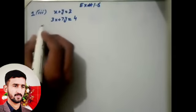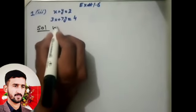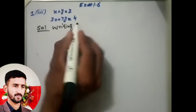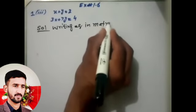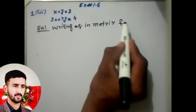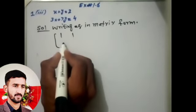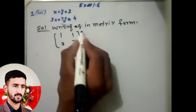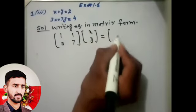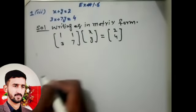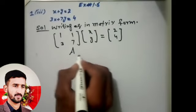So let's start. Solution: writing equations in matrix form. [1, 1; 3, 7] times [x; y] equals [2; 4]. This one is A.